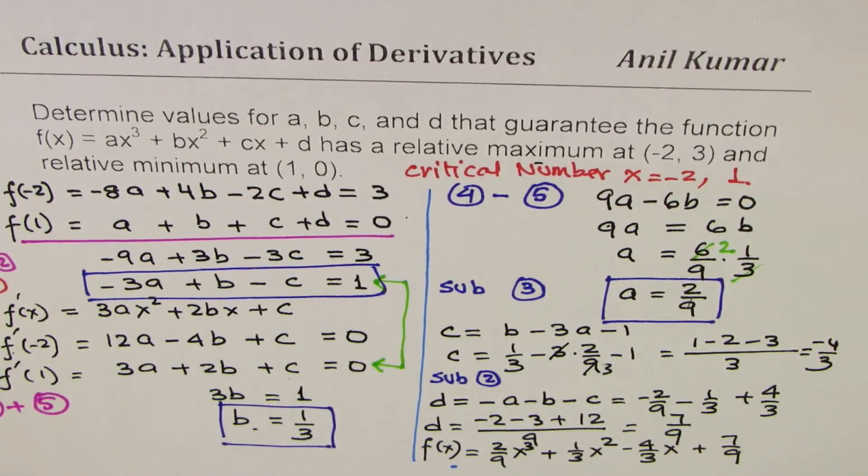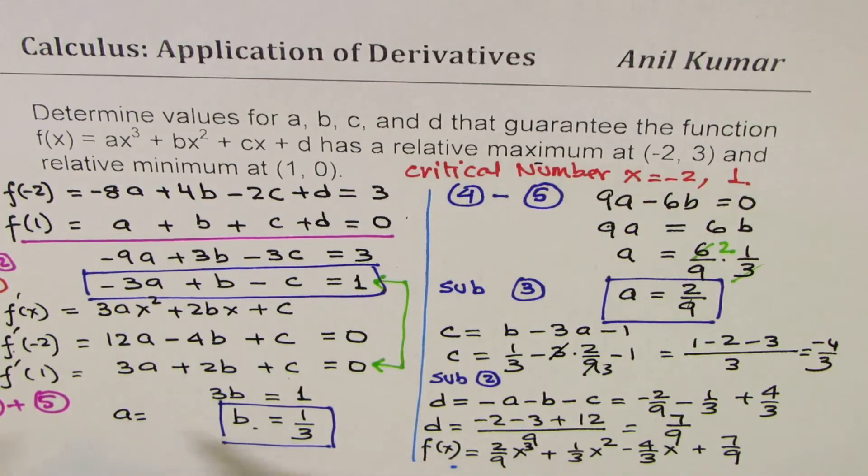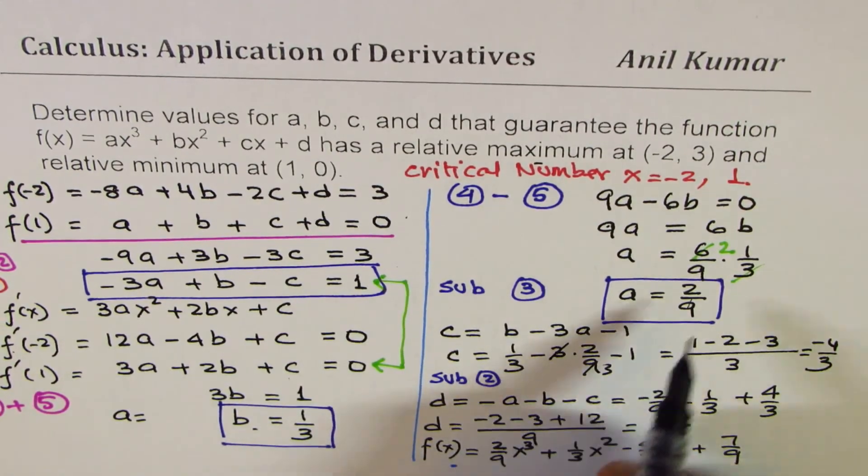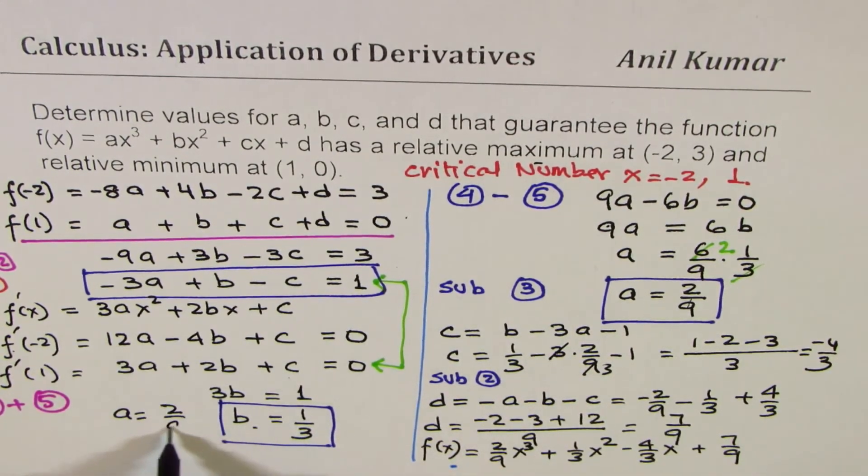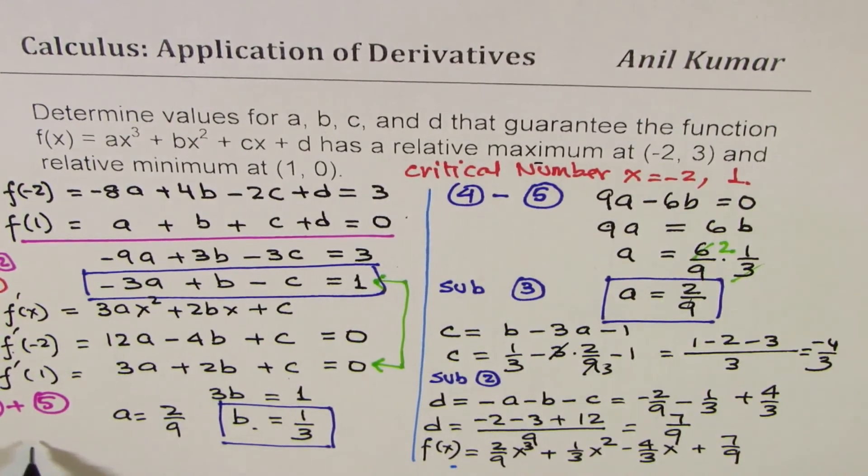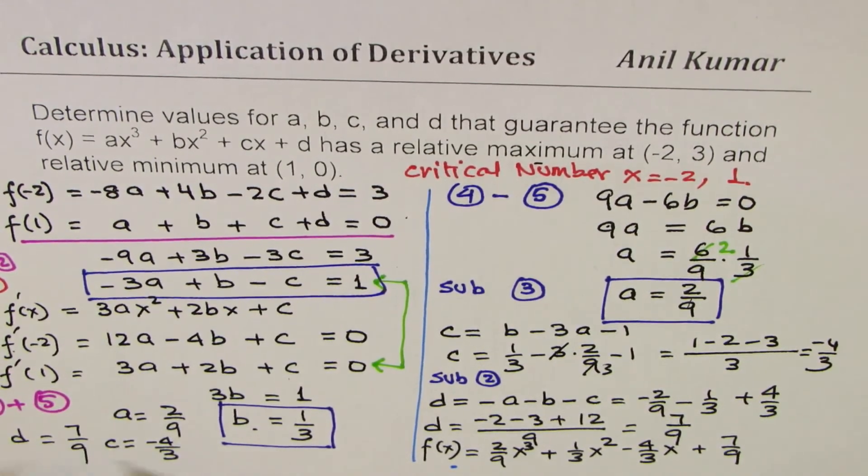So we have, let me write down here, a = 2/9, b = 1/3, c = -4/3, and d = 7/9. So that is how we can find all the values for the given function.